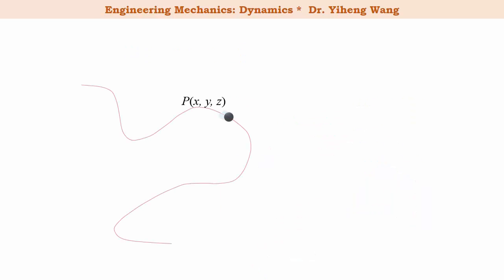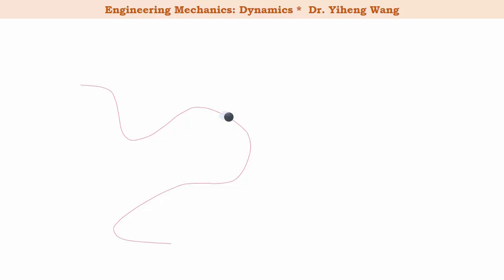For a particle, in a short moment dt, it travels along a curved path from location P to P prime. The distance traveled is the arc length ds. At any given time, we can set up a pair of axes from the particle: a t tangent axis that is tangent to the path and always points towards the direction of motion, with unit vector ut, and an n normal axis that is normal to the path, always pointing towards the center of curvature, with unit vector un.